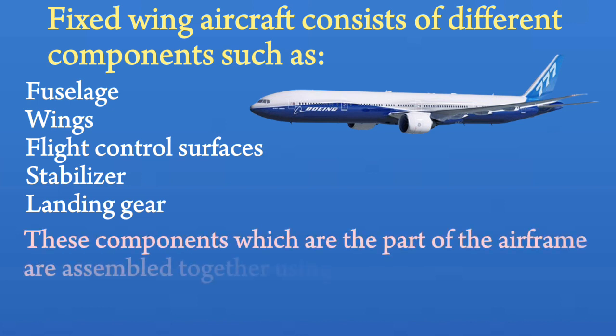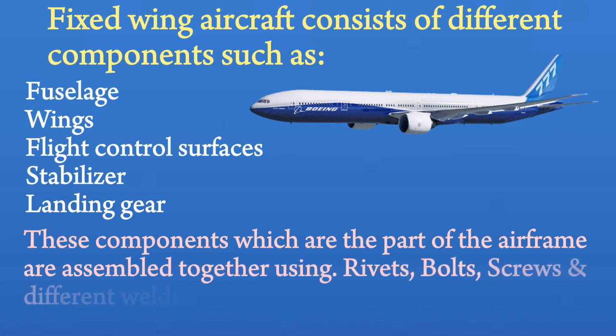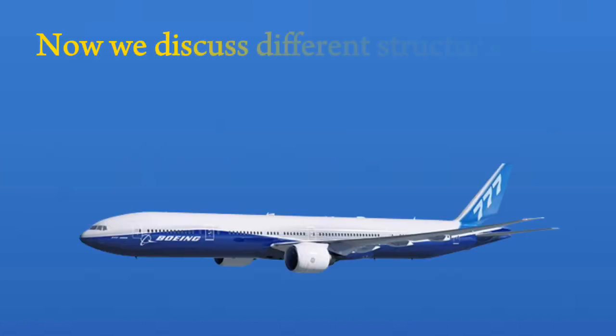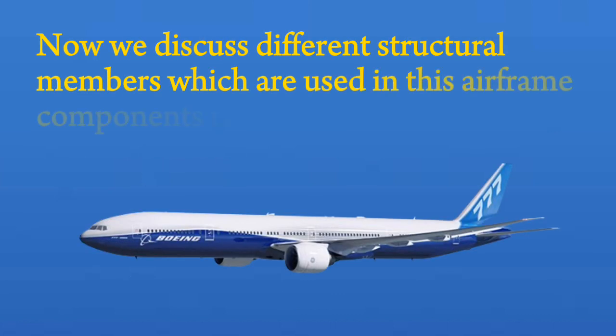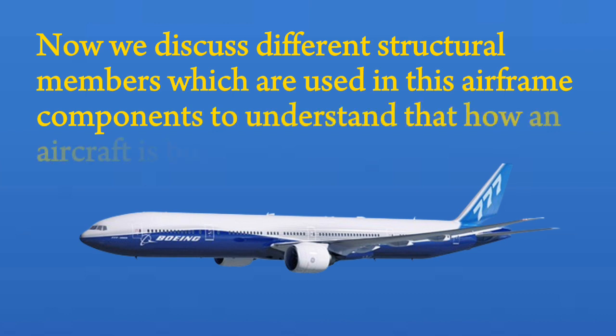These components, which are part of the airframe, are assembled together using rivets, bolts, screws, and different welding techniques. Now we discuss different structural members which are used in these airframe components to understand how an aircraft is built.